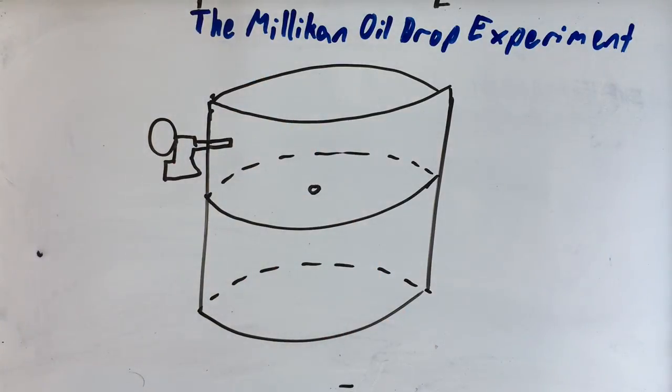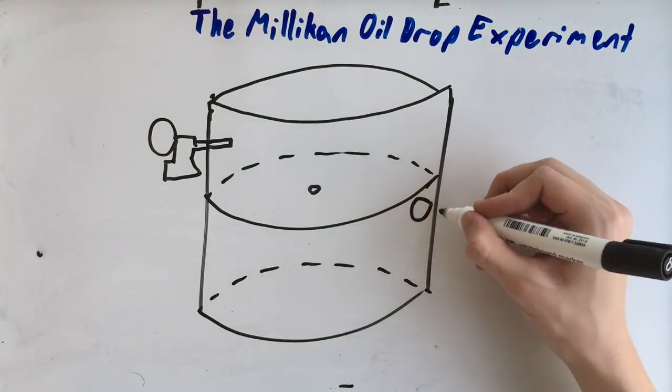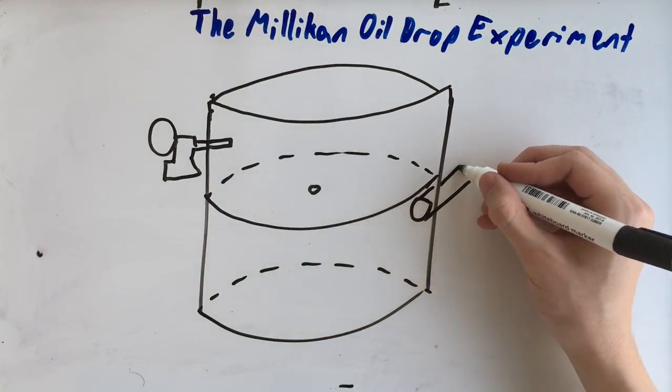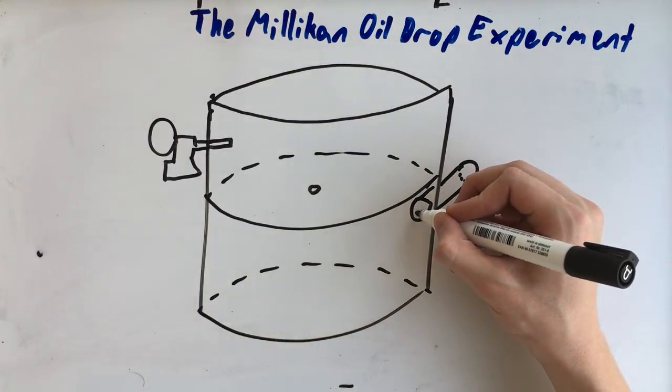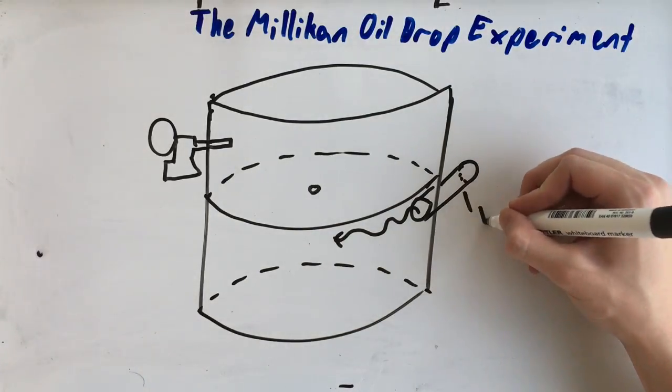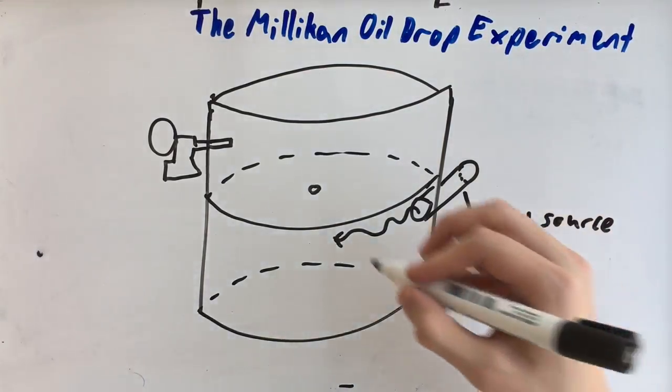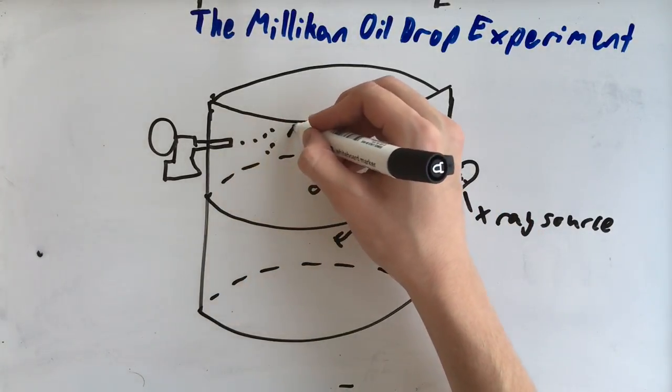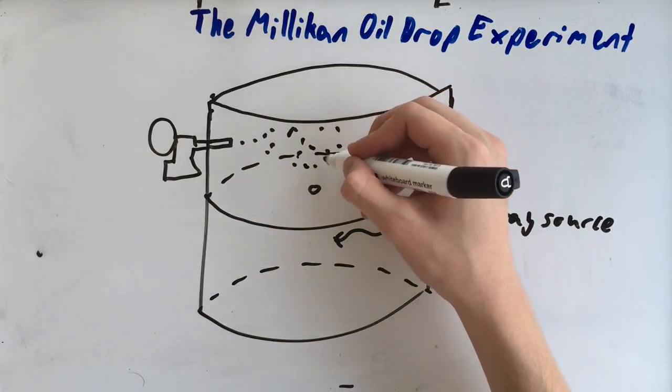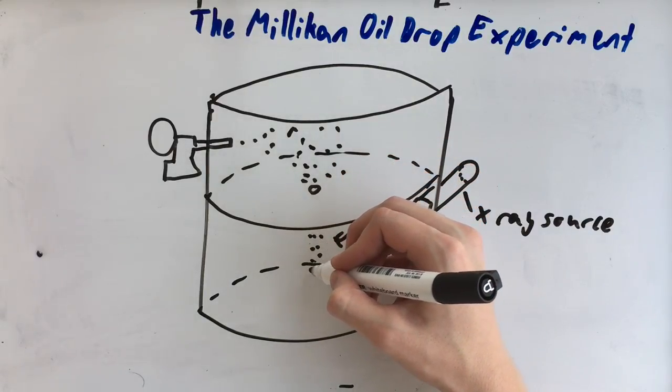You have a radiation source here which emits x-rays. This is to ionize the oil droplets that are sprayed through here and fall through the hole.